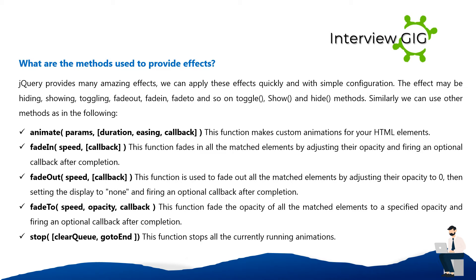What are the methods used to provide effects? jQuery provides many amazing effects that can be applied quickly with simple configuration. The effects include: hiding, showing, toggling, fadeOut, fadeIn, fadeTo, and so on. Key methods include: animate(params, duration, easing, callback) — creates custom animations for HTML elements; fadeIn(speed, callback) — fades in matched elements by adjusting opacity; fadeOut(speed, callback) — fades out matched elements by setting opacity to zero then display to none; fadeTo(speed, opacity, callback) — fades matched elements to a specified opacity; stop(clearQueue, goToEnd) — stops all currently running animations.